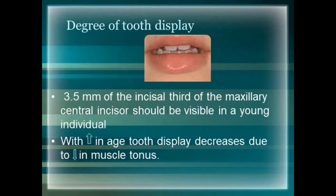The first parameter is degree of tooth display. In the static position of the lip, 3.5 mm of the incisal third of the maxillary central incisor should be visible in a young individual. If it is less than 2 mm, we have to consider procedures like orthodontic extrusion. With increasing age, tooth display decreases due to a decrease in muscle tone.